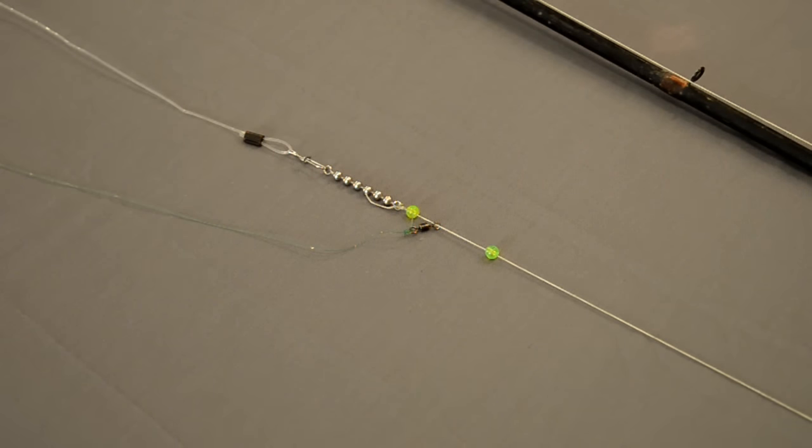As far as mainline is concerned, I prefer a 50 to 65 pound braid. The thinner diameter allows the line to cut through the water with less drag.